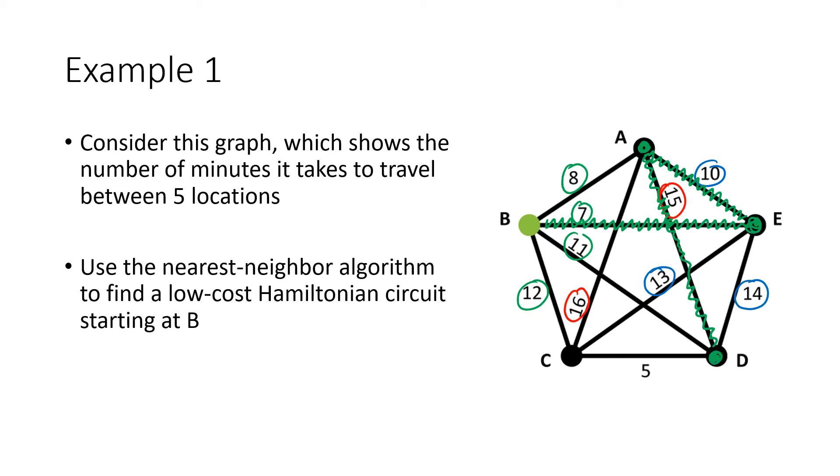Now there's only one place that we haven't been yet, and that's C. So the only number we need to consider is that five. So there's no choices. We've got to go to C. And then now we've been to all of our locations. So the last step will be to go back to the starting point. And so there's the circuit that we get using this algorithm.